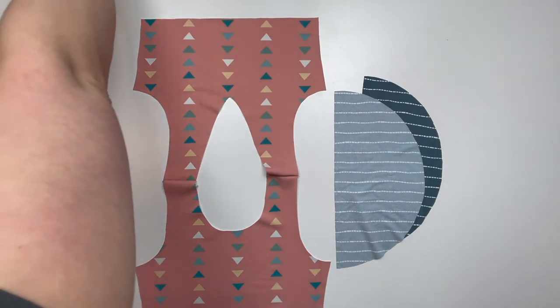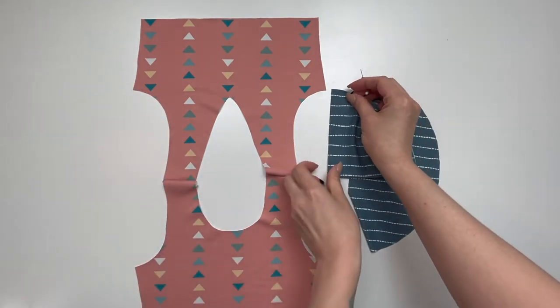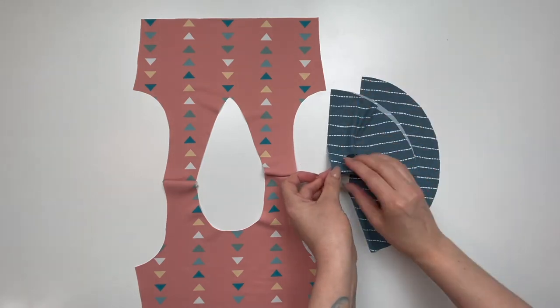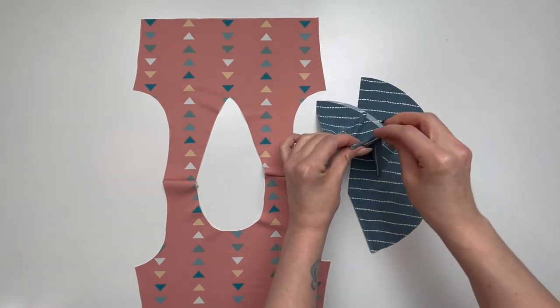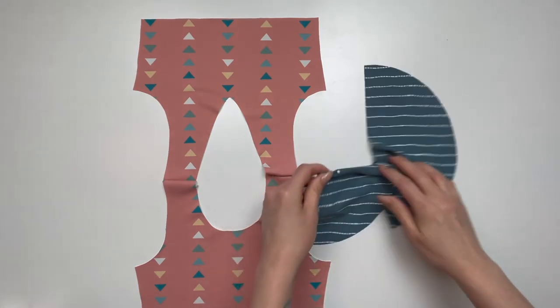On the straight side of your flutter sleeve, mark the middle with a pin. Repeat with the remaining flutter sleeve.